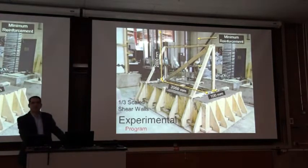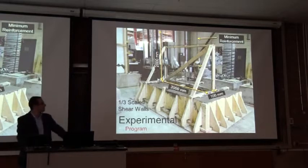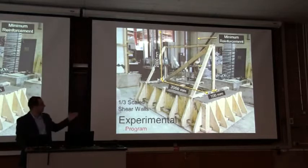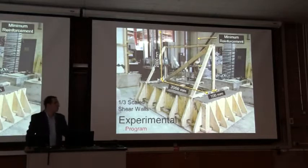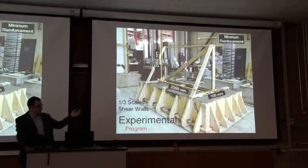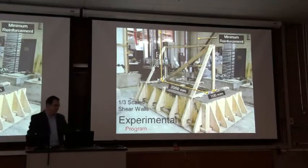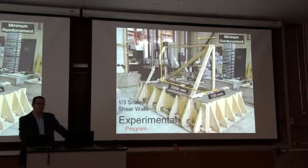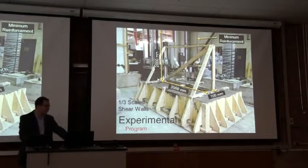This is part of the experimental program we are conducting. These are the dimensions of the wall — a one-third scale reinforced concrete wall based on the prototype building I showed. It is 2,000 mm by 2,000 mm and 100 mm thick. This wall has minimal reinforcement, no boundary elements, and no confinement — this is the minimum reinforcement that was typical prior to the 1970s.